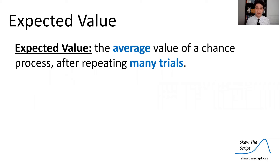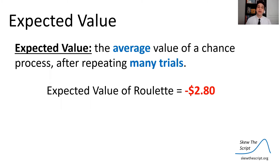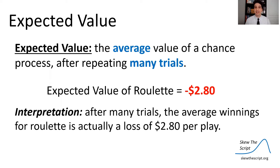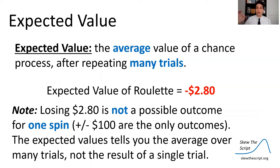This brings us to expected value. Expected value is the average value of a chance process after repeating many trials. The expected value of roulette is a loss of $2.80 when you put $100 on black or red. After many trials, the average winnings is a loss of $2.80 per play. Note that losing $2.80 is not a possible outcome from one spin — from one spin you either gain or lose $100. Expected value tells you the average gain or loss over many trials, not from one single trial.